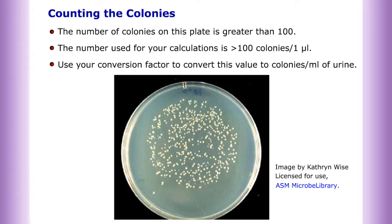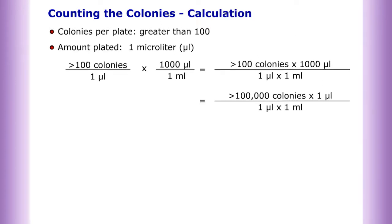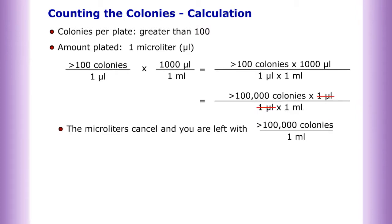If the number of colonies on the plate is greater than 100, the number used for your calculations is greater than 100 colonies per one microliter. Use your conversion factor to convert this value to colonies per milliliter of urine. The calculation: colonies per plate greater than 100, amount plated one microliter — the microliters cancel and you are left with greater than 100,000 colonies per one milliliter.